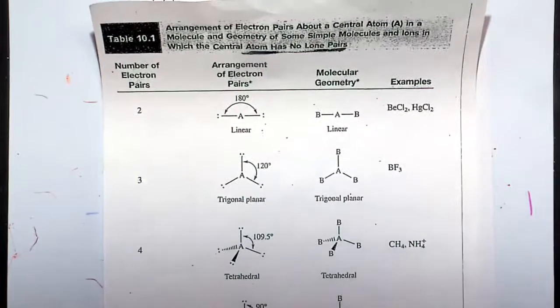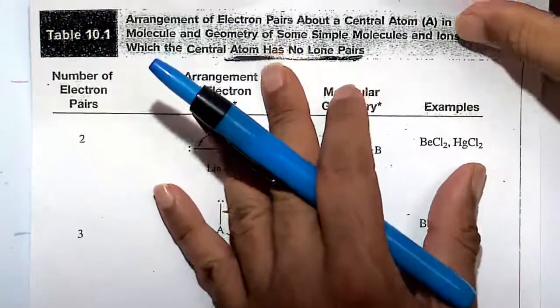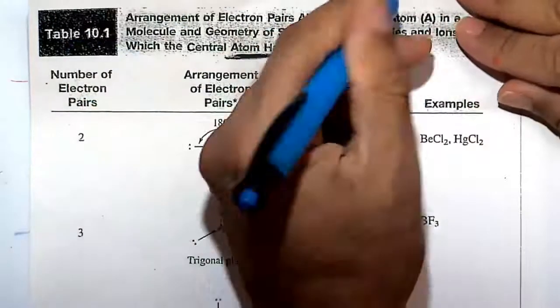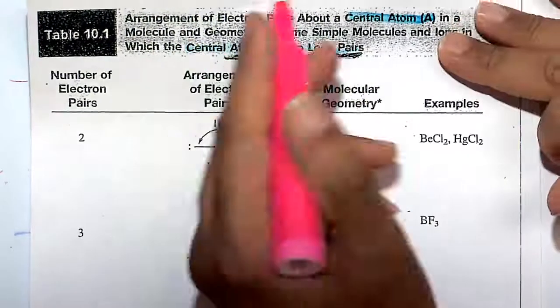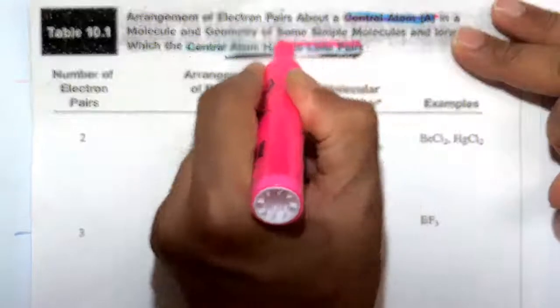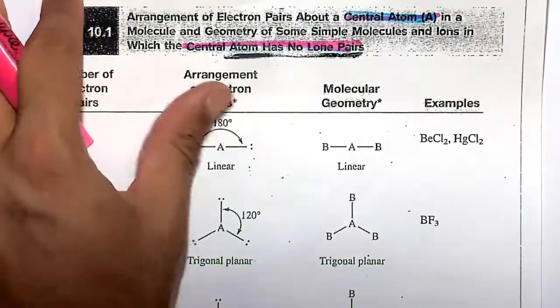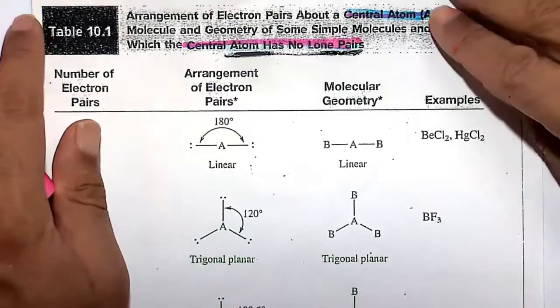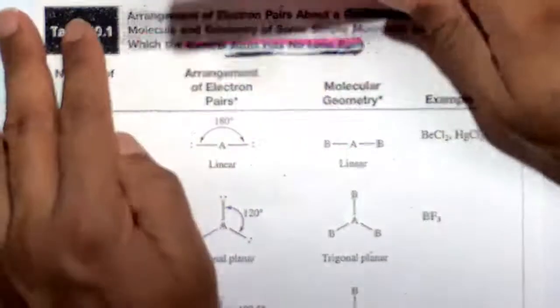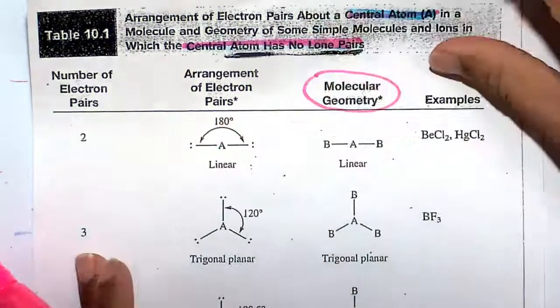So two bonds and zero lone pairs, we're going to use table 10-1 in your book. And again, I want you to emphasize that we're looking at the central atom that has no lone pairs. Central atom with no lone pairs. So if we have central atoms with lone pairs, then we will not use table 10-1 in your textbook. We will use table 10-2. That's for the consideration with lone pairs. We're looking for how the no lone pairs or the presence of lone pairs alters the geometry, how it alters the overall geometry of the molecule.